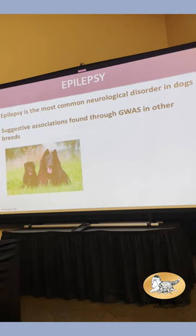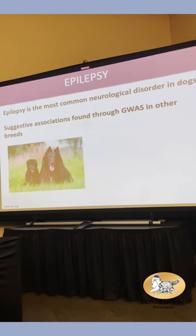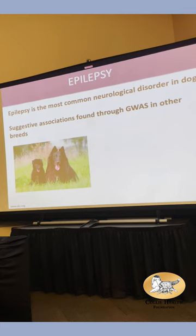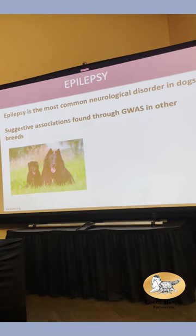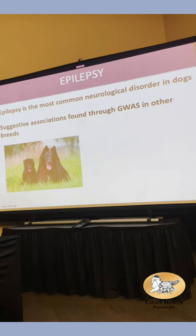A few studies have identified genes underlying very specific types of seizures, and there are a handful of studies for idiopathic epilepsy in other breeds — none include the collie. They find some suggestive associations; there's one locus they're fairly confident about involving shepherds, but it doesn't explain everything. I argue that this is going to be one of those diseases where probably every breed has its own little set of contributing loci.